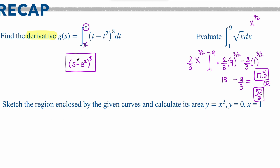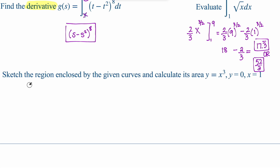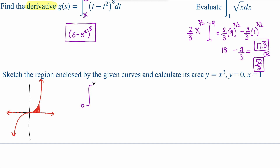Next, sketch the region enclosed by the given curves. If I graph x cubed, and I want to go from y equals 0, which is the x-axis, to when x equals 1, I'm looking for this area, which means I'm going from 0 to 1 of x cubed. To find the integral, add 1 to get x to the 4th, and offset it with one fourth in front because 4 times one fourth cancels. Evaluating from 0 to 1, my answer is going to be one fourth.